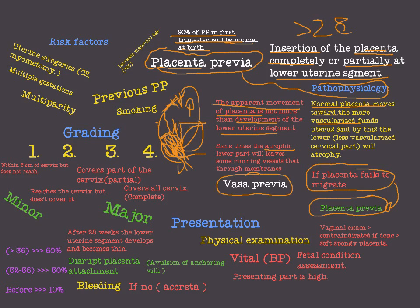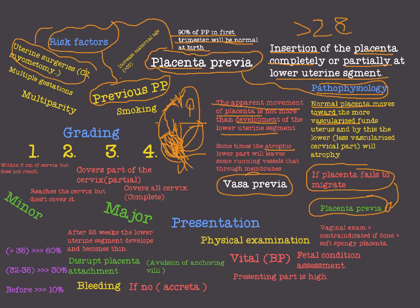Now let's move to the risk factors of placenta previa. The most important one is previous placenta previa. Uterine surgery — caesarean section, myomectomy, and so on — are all risk factors. Multiple gestations and multiparity also cause placenta previa because they result in a larger placenta, and a larger placenta is a risk factor for placenta previa.